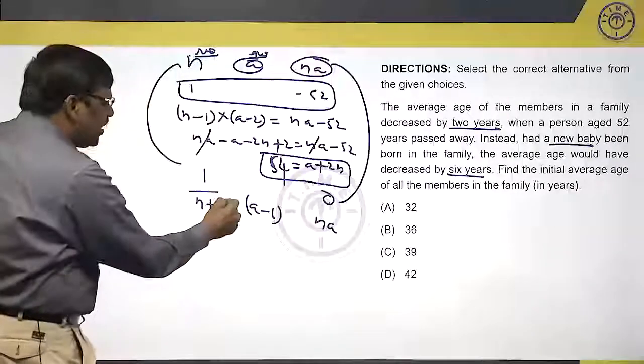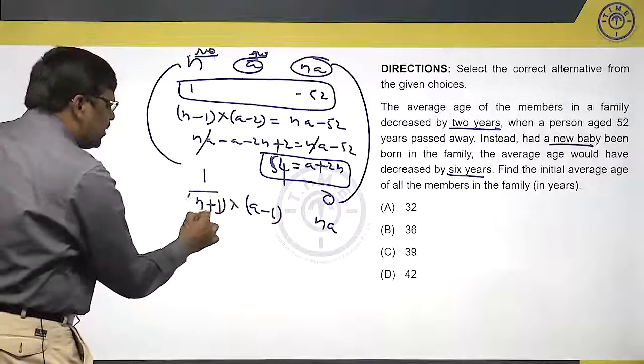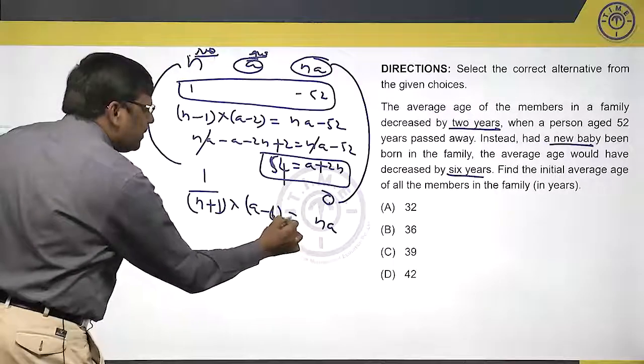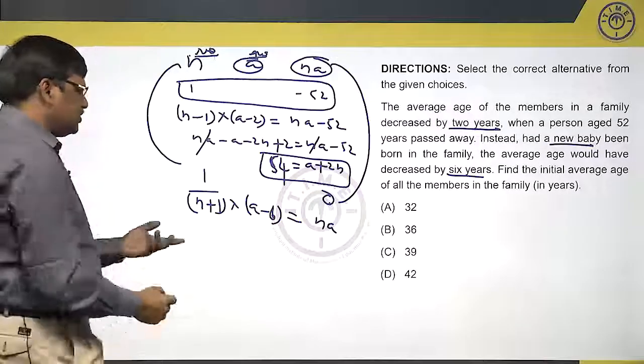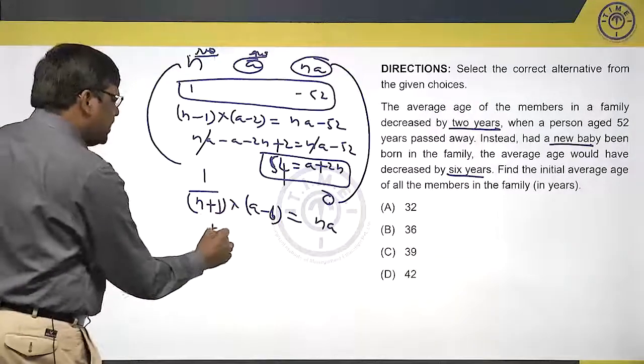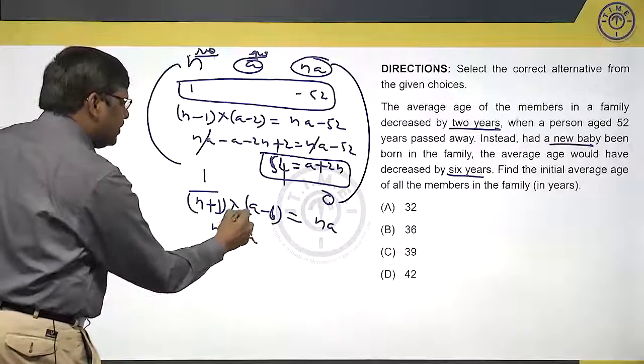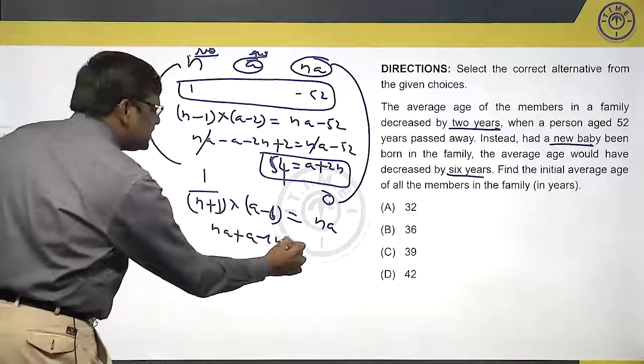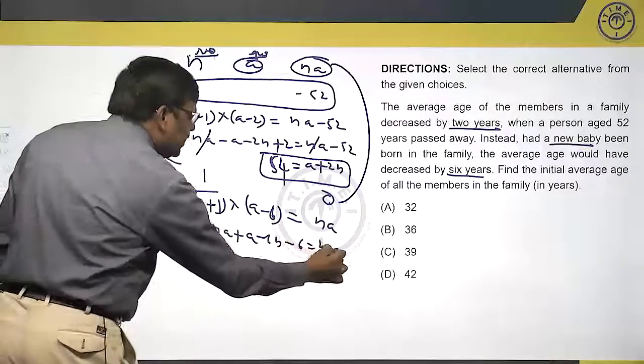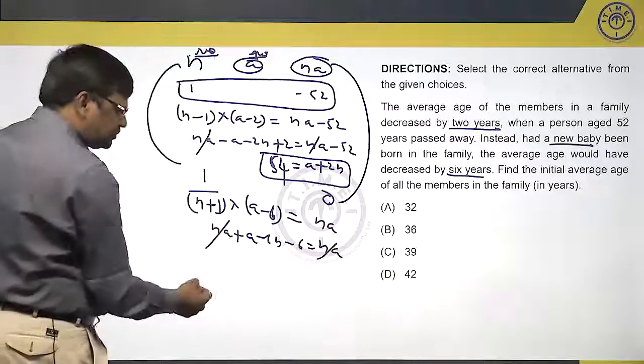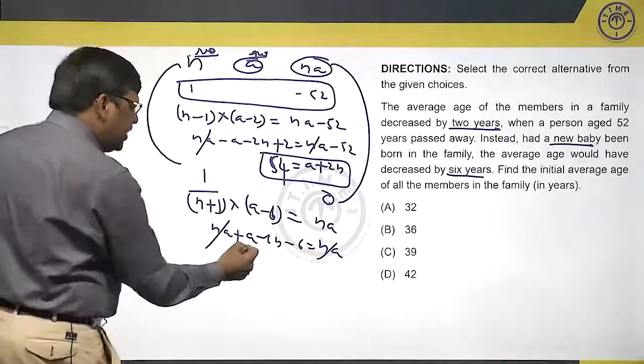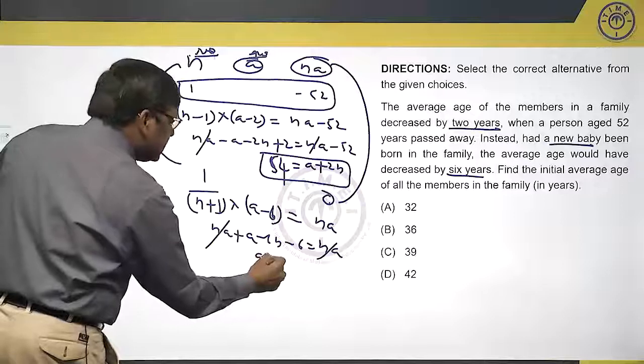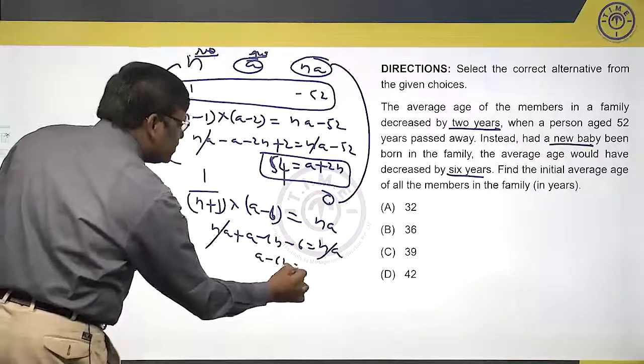But the new average into the new number of people should give me same n a. If you simplify, n a plus a minus 6n minus 6 equals to n a. n a gets cancelled. Well, if I take a minus 6n, a minus 6n equals to 6.